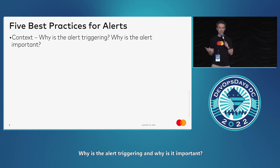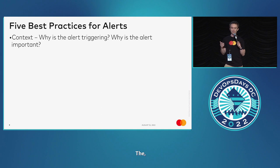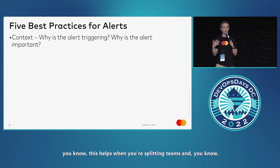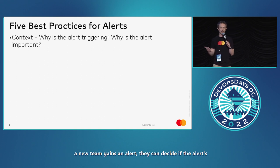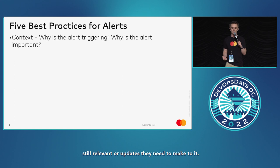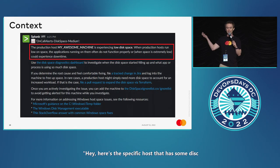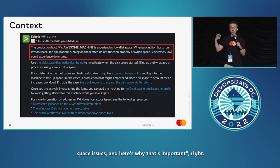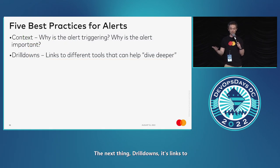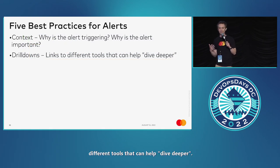The first best practice is context — why is the alert triggering and why is it important? This helps when you're splitting teams and a new team gains an alert; they can decide if it's still relevant or what updates they need to make. In the example here, that first paragraph explains the specific host that has disk space issues and why that's important.